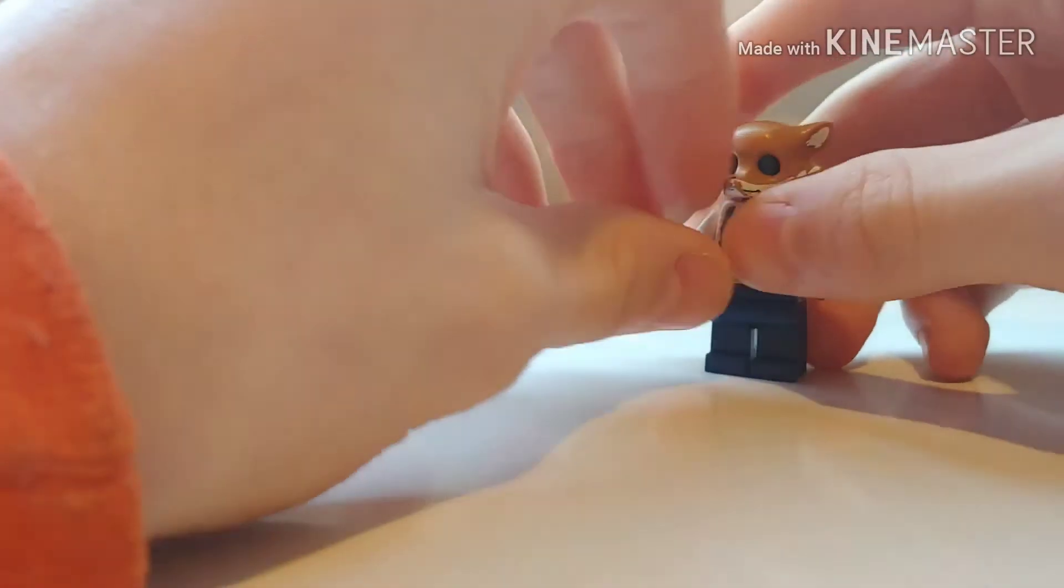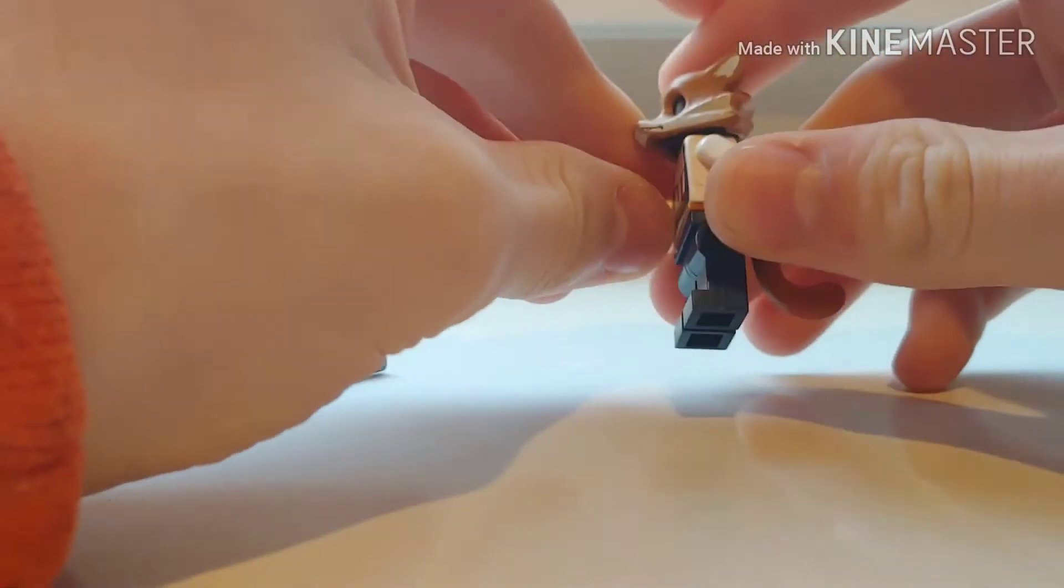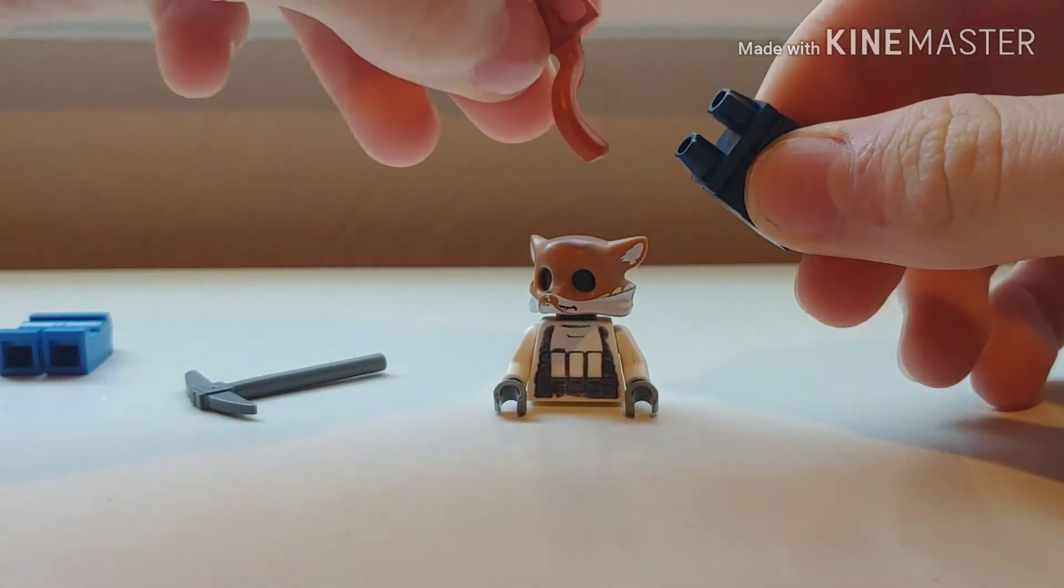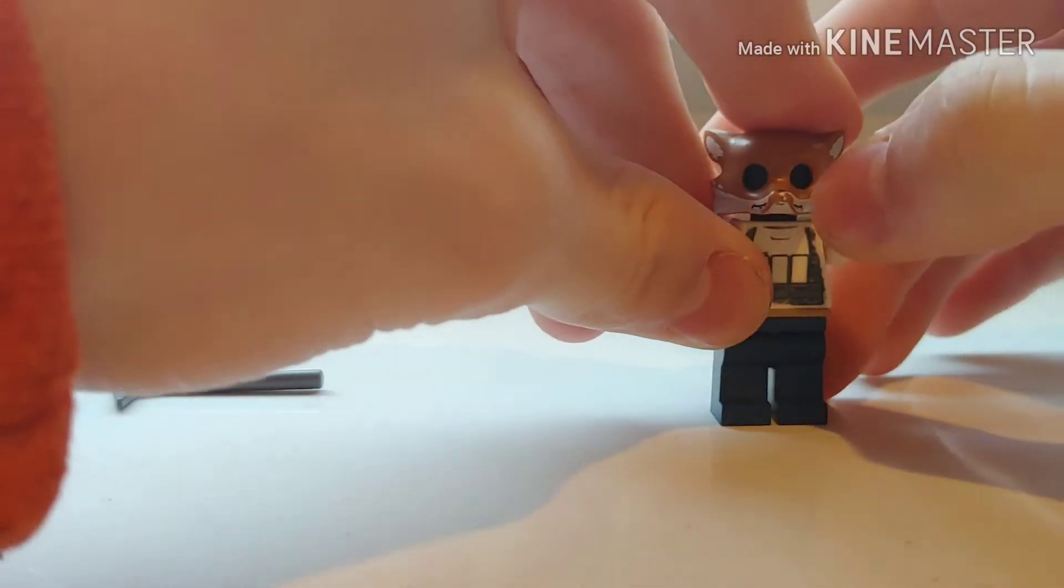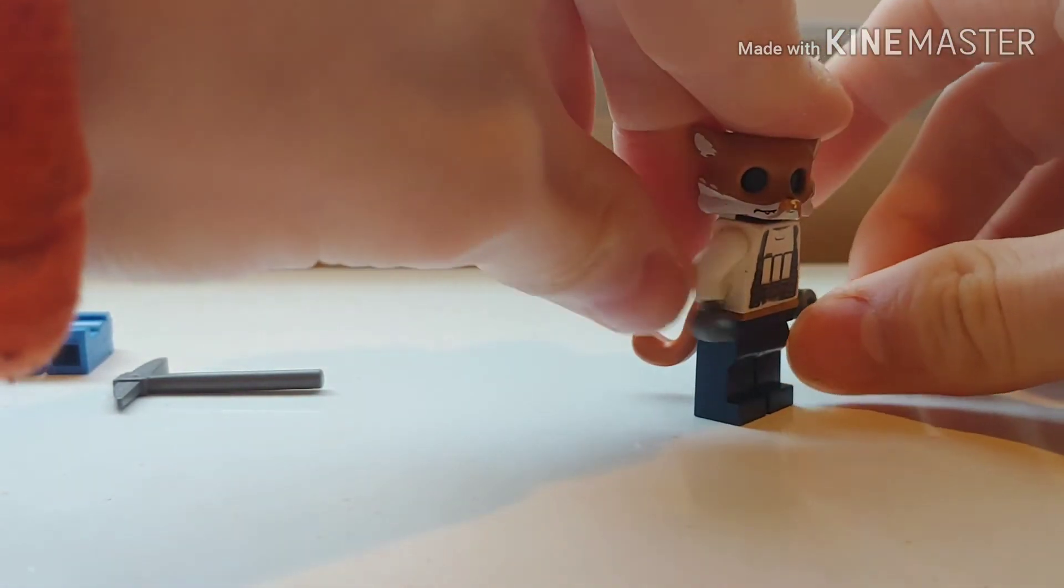But yeah, this character is very nice. I built it using the tail from the Monkey King from Chima, the body from the First Order Heavy Assault Trooper from Star Wars Force Awakens or any of the newer Star Wars trilogy sets.